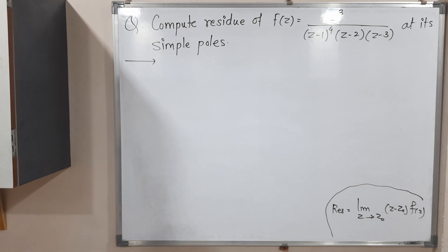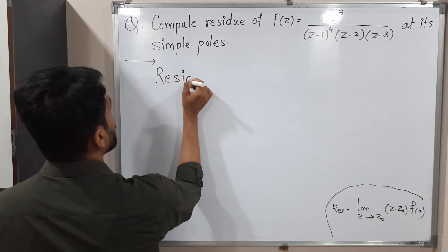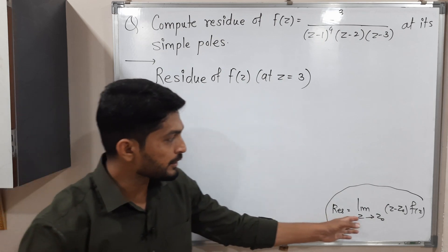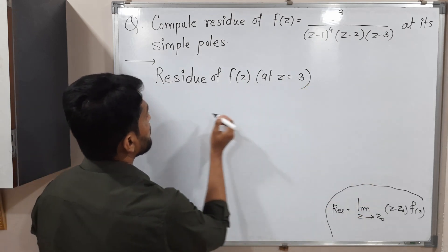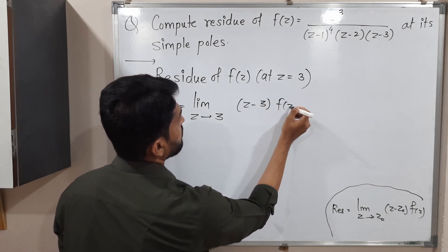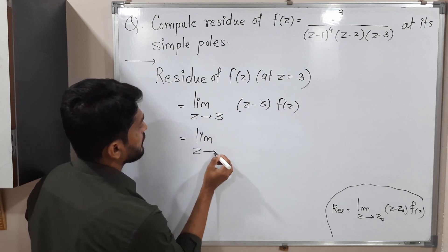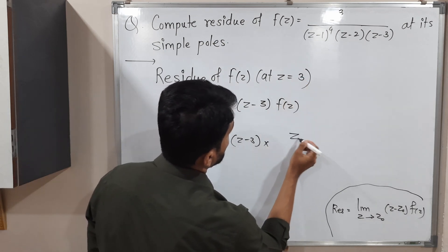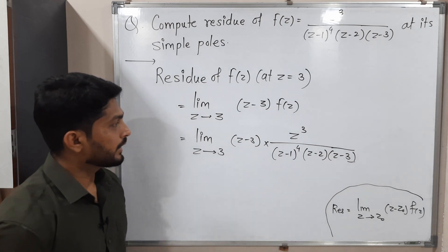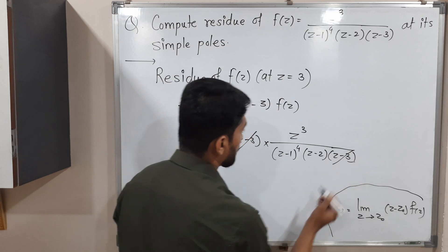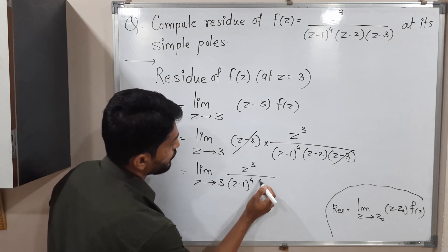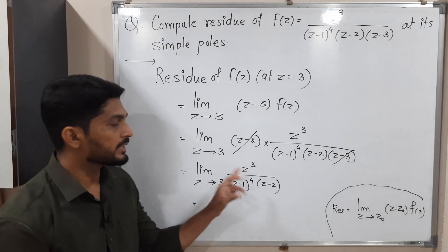So let us find residue at z equal to 3. Residue of f of z at z equal to 3. It is a simple pole, so we use the same formula. z0 is 3, so limit z tends to 3 of (z minus 3) times f of z, which is z cube upon z minus 1 raise to 4, z minus 2, z minus 3. We cancel the z minus 3 bracket. This equals limit z tends to 3 of z cube upon (z minus 1) raise to 4 times (z minus 2). We simply put z equal to 3 everywhere.